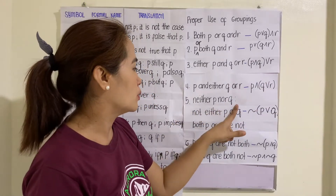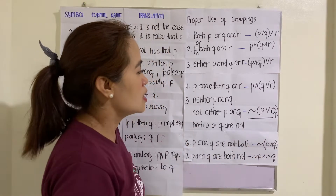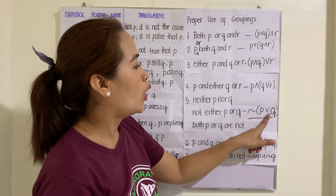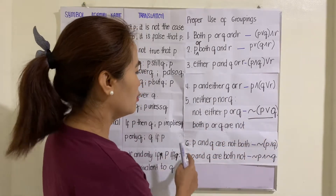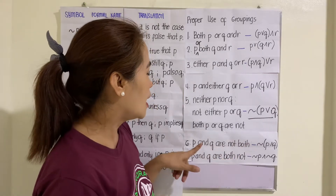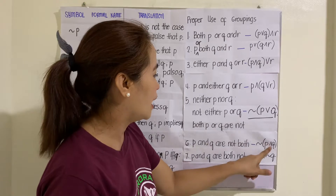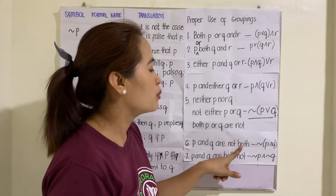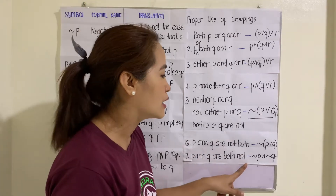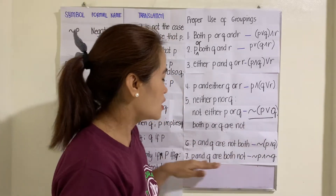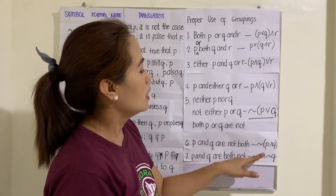Number five — 'neither P nor Q,' 'not either P or Q,' or 'both P or Q are not' — these are the same translation. The symbol is the negation applied to P or Q. Number six — 'P and Q are not both,' meaning negation is applied to the conjunction P and Q. Number seven — 'P and Q are both not,' which means 'not P and not Q' — take note of the difference between 'not both' and 'both not.'